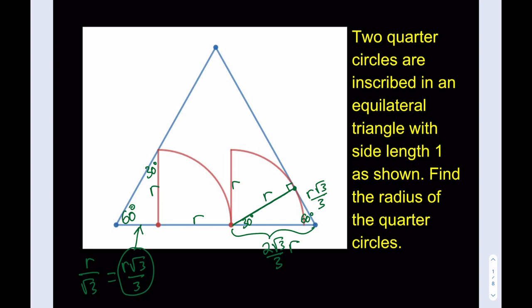Now, what do we know? We know that this length is R root 3 over 3, this length is R here, and this piece is 2 times square root of 3 over 3 times R. Beautiful. And what happens if you put them all together? You'll get the side length for the equilateral, which we know is 1.